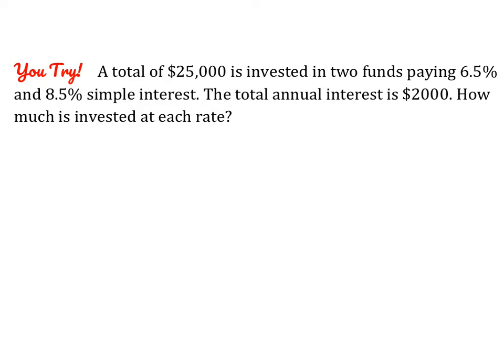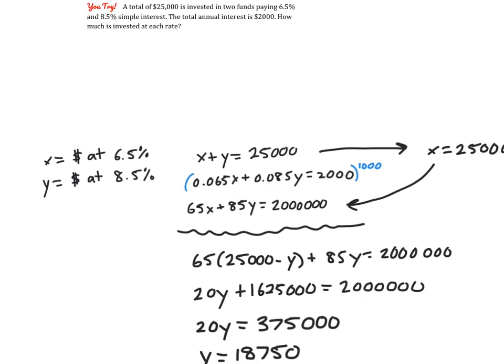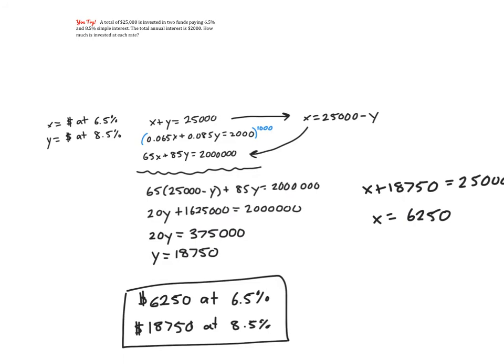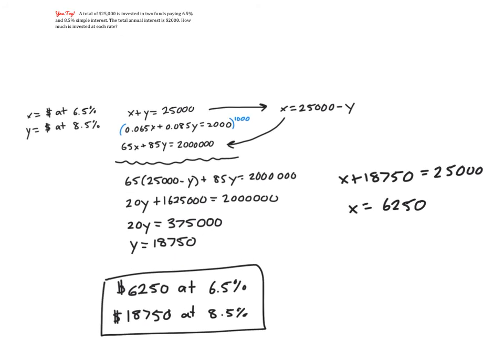Go ahead and pause the video and give this one a try. For this problem, you actually have to multiply by 1,000 to clear the decimals, which I would always recommend. You should end up with $6,250 invested at 6.5% and $18,750 invested at 8.5%.